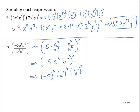Negative 5 to the third is negative 5 times negative 5 times negative 5, which is negative 125. For a to the second to the third — raising a power to a power means I multiply the exponents — so that's a to the sixth. Similarly, b to the sixth to the third is b to the 18th. So the answer is negative 125, a to the sixth, b to the 18th.